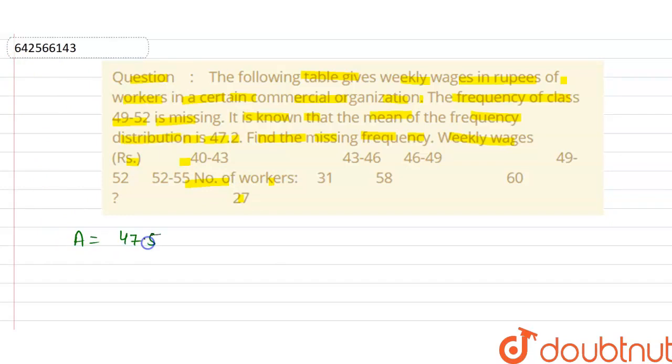Because assumed mean is from these given values, and difference is given as 3. Now let's draw the table for this question.